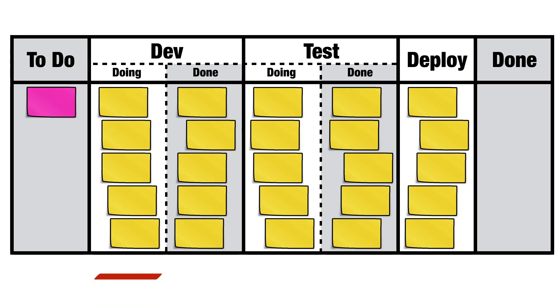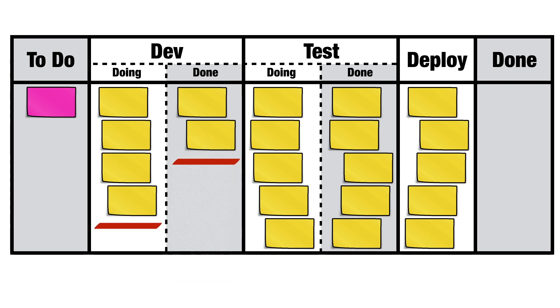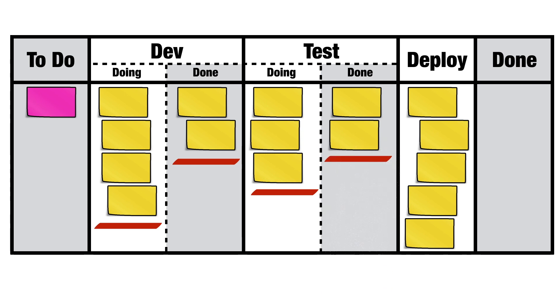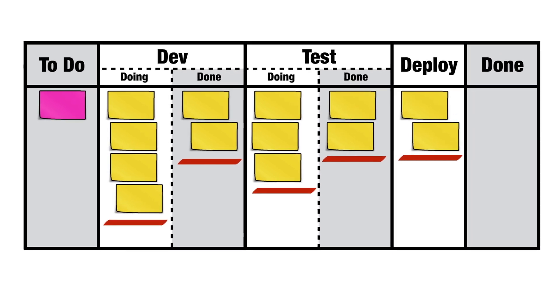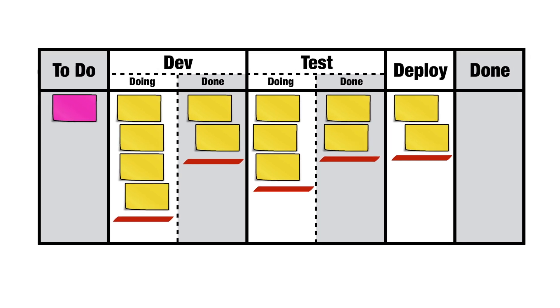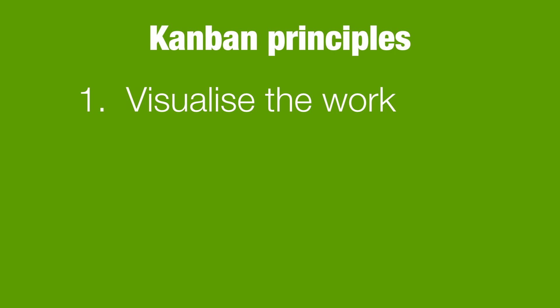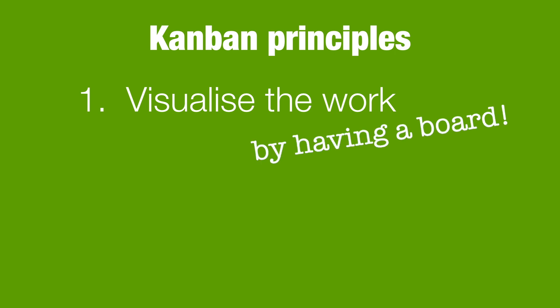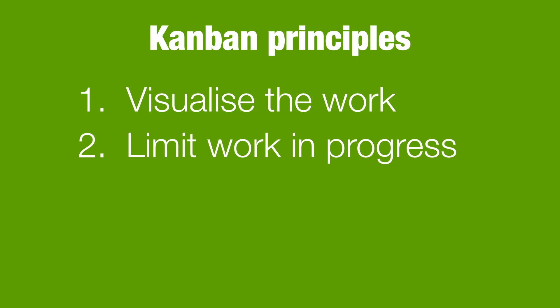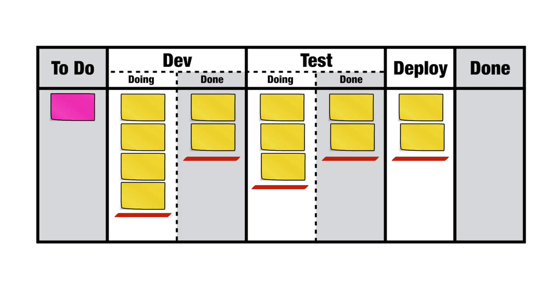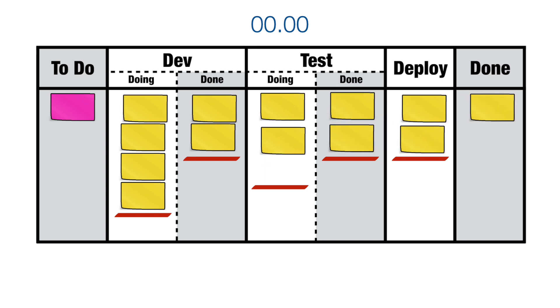I'm going to add a WIP limit of four for dev doing, two for dev done, three for test doing, two for test done, and two for deploy. We've already come across two Kanban principles. They are: number one, visualize the work; number two, impose WIP limits. Let's see this team in action, and keep an eye out for Mr. Pink. Things are rather gridlocked, so he's going to have to wait a few seconds for some space to appear.